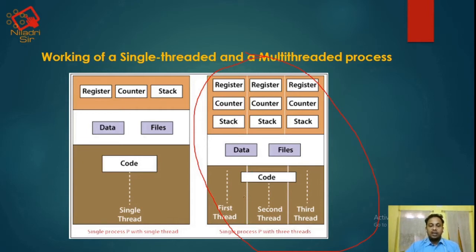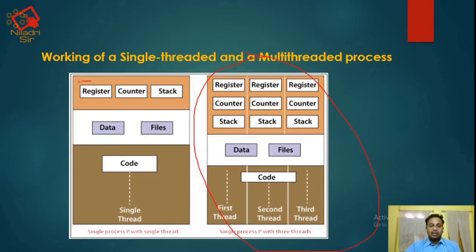For the first thread there are different register, counter, and stack. For the second thread there are also different register, counter, and stack. For the third thread as well. But for all 3 threads there are the same shared data and files.